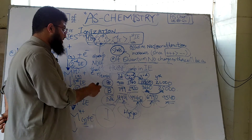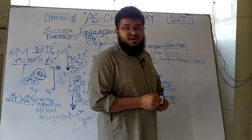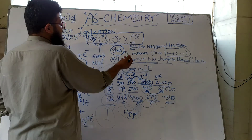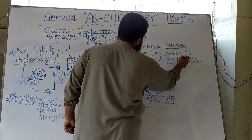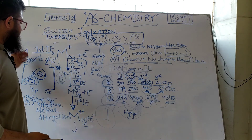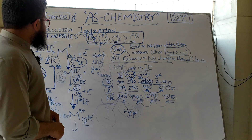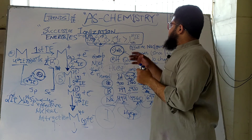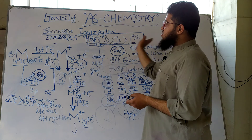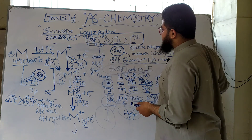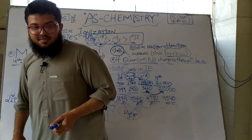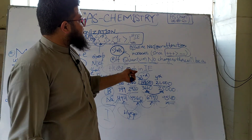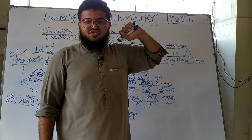To summarize: the effective nuclear attraction increases as electrons are removed because the positive charges become greater relative to the negative charges. This progressive increase in effective nuclear charge is the major reason successive ionization energies increase. This covers everything about successive ionization energies. We'll talk about the next topic in the next video — this was lecture 6 of our AS chemistry crash course. Thank you.